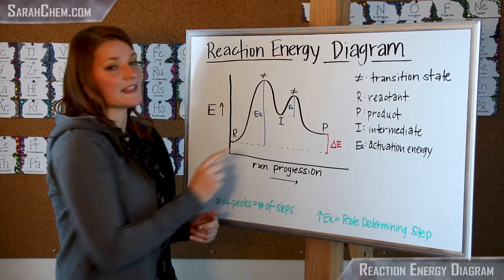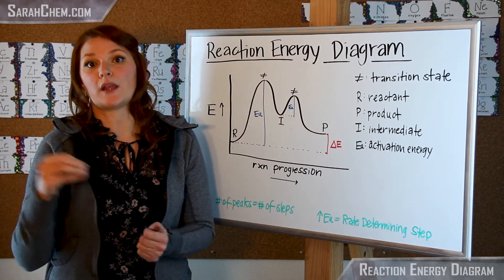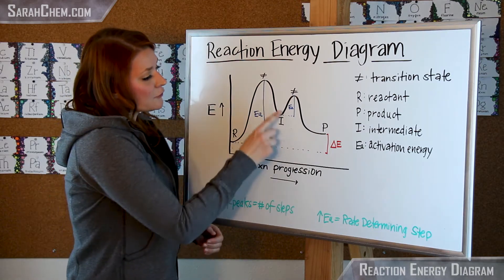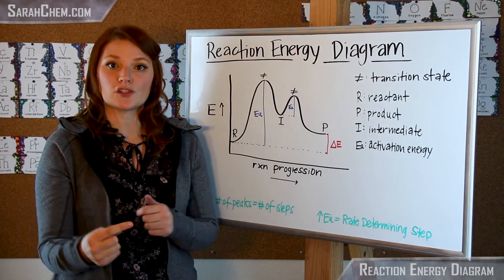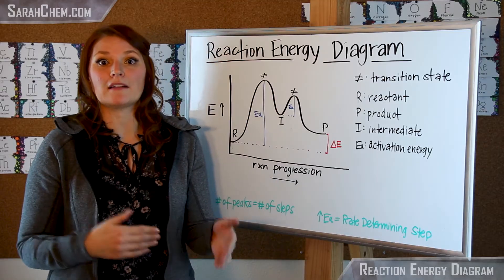The intermediate is something that is actually going to be formed in the process of this reaction mechanism, and it's something you could isolate. This intermediate is formed in the process but then it is also going to be consumed. So the intermediate is something that is not going to be present in the overall balanced reaction.